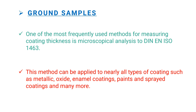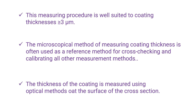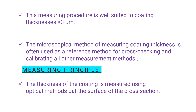Where the coating is thinner, measurement uncertainty increases disproportionately. For thinner coatings, spherical abrasion or an oblique section should be used. The microscopical method of measuring coating thicknesses is often used as a reference method for cross-checking and calibrating all other measurement methods. The measuring principle: the thickness of the coating is measured using an optical method on the surfaces of the cross-section.